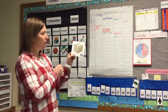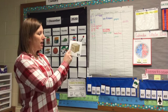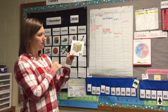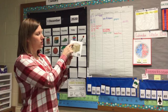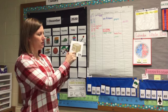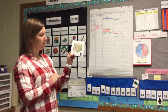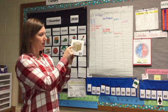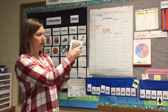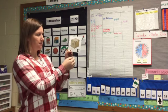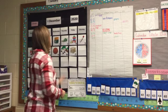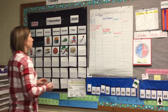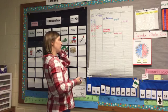I know a rectangular prism has rectangles on its sides and a cube has squares on all of its sides. So a box is a cube — it has squares on all sides.